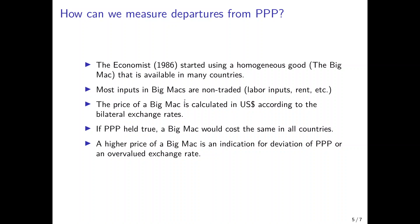The idea behind the Big Mac index is that most inputs of Big Macs are non-traded and costs therefore accrue locally — such as labor inputs in the McDonald's restaurant, where workers are hired locally at the local going wage rate, and rent set according to local circumstances. Even the ingredients are typically bought locally. You can observe the price of the Big Mac in local currency, calculate its price in US dollars using the bilateral exchange rate, and if purchasing power parity held true, the Big Mac should cost the same in all countries.